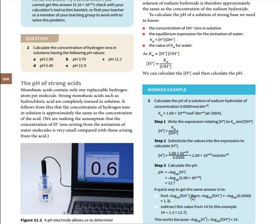That's one method. Another method is to find the pOH first. The pOH is given as negative log of the hydroxide ion concentration, which equals 1.3. Then pH = 14 − 1.3 = 12.7. This simpler method uses the formula: pH + pOH = 14.